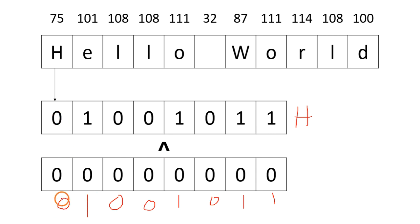After XORing with zero, we get the same character in binary format, which is H.